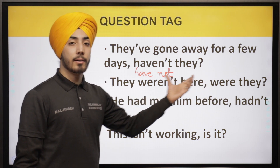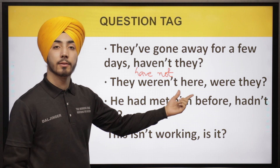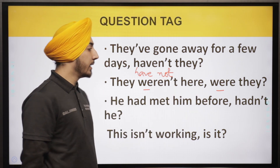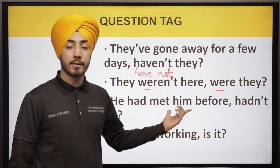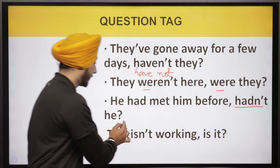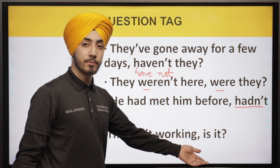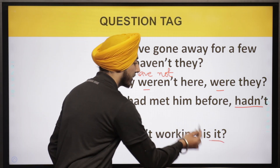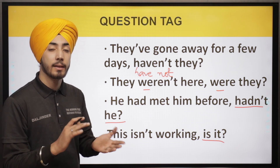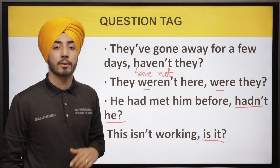The positive/negative rule still applies here. 'He had met him before' is a positive sentence, so the question tag is negative: 'hadn't he?' And 'This isn't working' is a negative sentence, so the question tag is positive: 'is it?' So whatever auxiliary verb — have, be, were, etc. — is used in the sentence, the question tag is also made from that auxiliary verb.